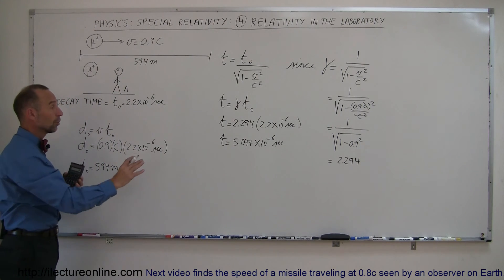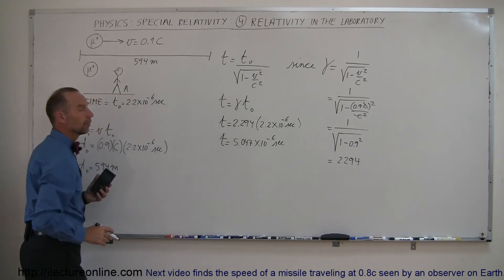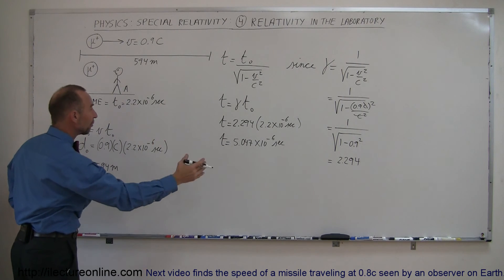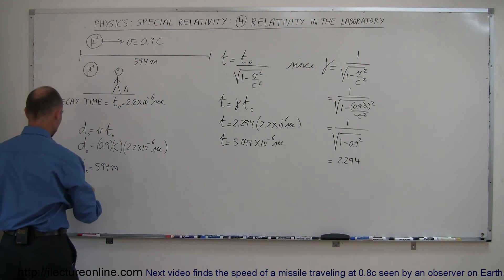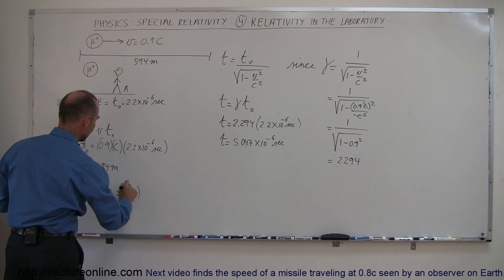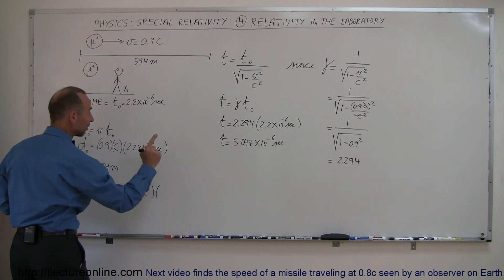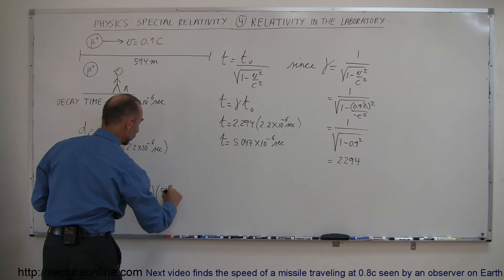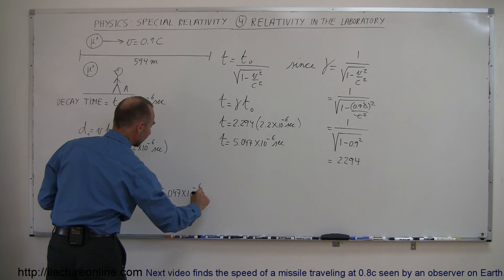But because of the relativistic time, we can actually see the particle traveling farther than it was supposed to. So what we can then say is that d is therefore equal to v times t, v is 0.9 times c times the time that will exist, 5.047 times 10 to the minus 6 seconds.